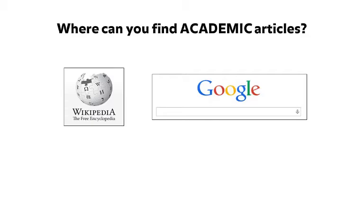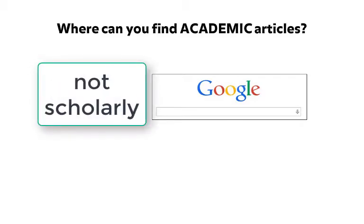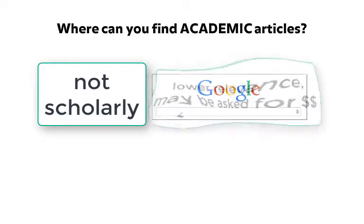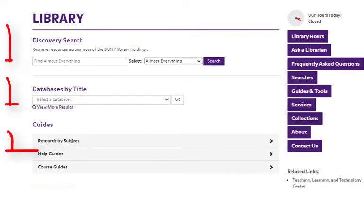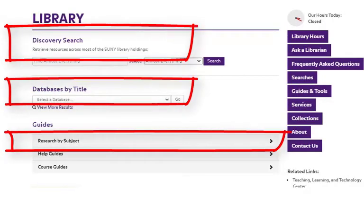Your professor has asked you to find academic or scholarly articles for a research paper. Where do you look first? Wikipedia and websites are not scholarly sources and may contain unreliable information. Google may locate academic articles, but it can be hard to find relevant results and you may be asked to pay for access to the full text of the article. To find academic articles, you will need to use a library database.